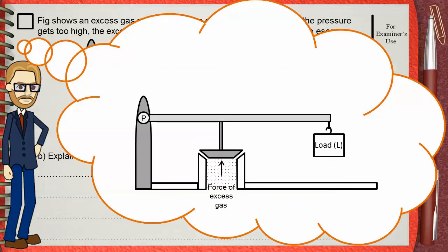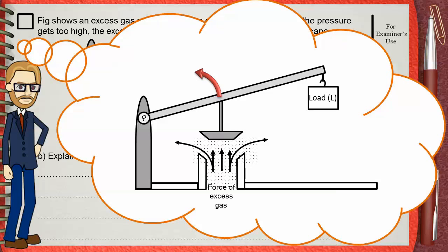The force of excess gas pushes the piston upwards. When its pressure increases, the piston is pushed upwards, causing an anti-clockwise moment about the point P. Now, the excess gas can escape.